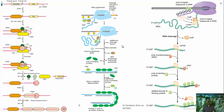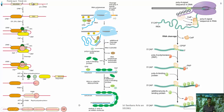The next process is tailing, where a tail is added to the 3' end of the RNA. Two important sequences are needed at the 3' end: the AAUAAA sequence and a GU-rich sequence downstream. These are recognized by two proteins — CPSF, which recognizes the AAUAAA region, and CSTF, which recognizes the GU region. Two additional proteins, CF1 and CF2, also bind and cleave the RNA at this site.